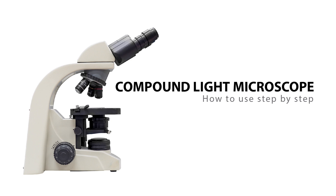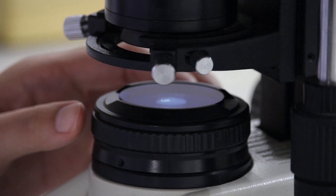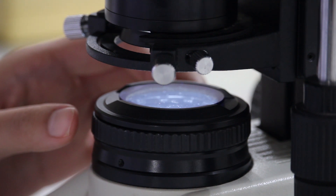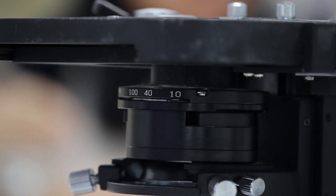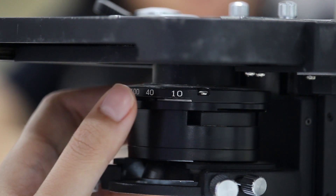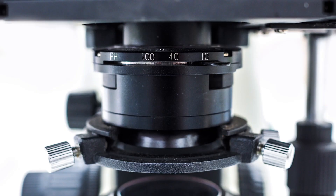The compound microscope at Mae Fah Luang University Biology Laboratory has an additional condenser lens. Turn the condenser adjustment ring in the counter-clockwise direction. Then turn the diaphragm lever to the left when using the 4x objective. Remember that when using 10x magnification or higher, adjust the diaphragm lever to the right.